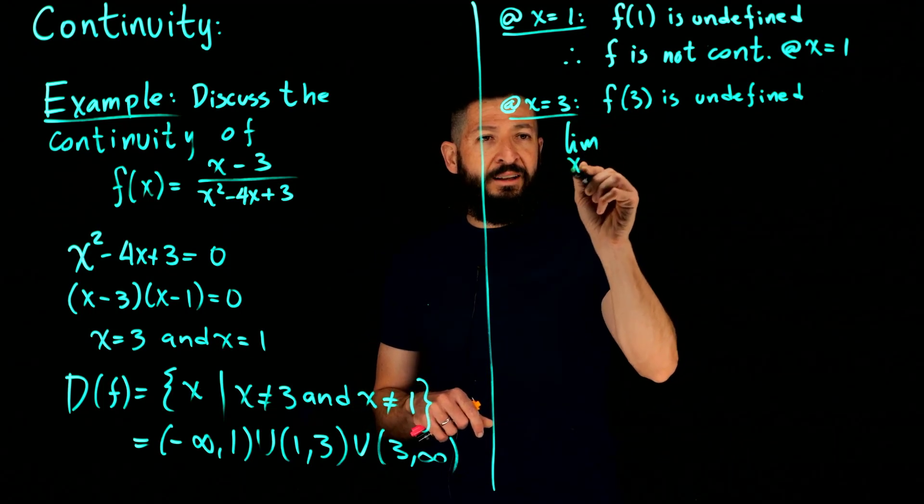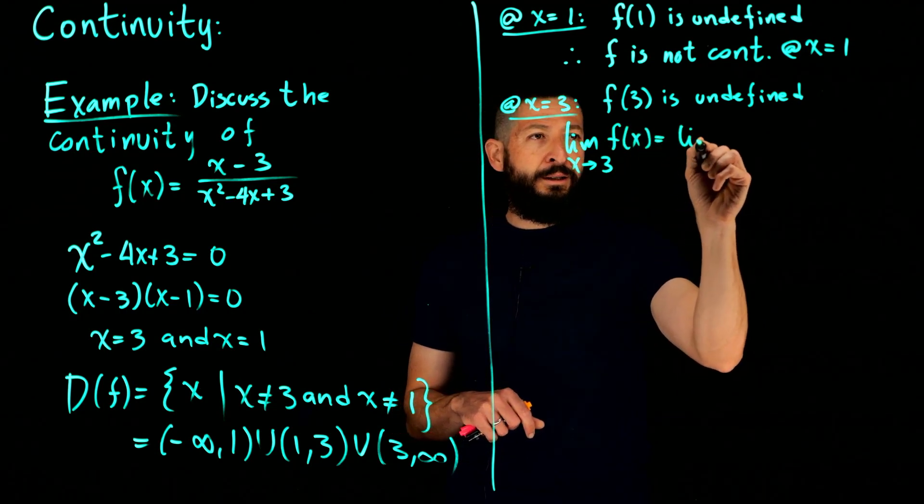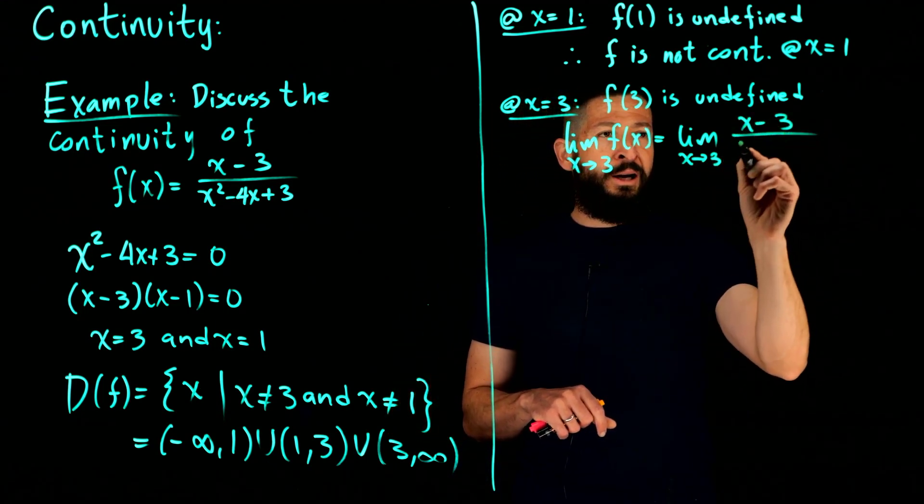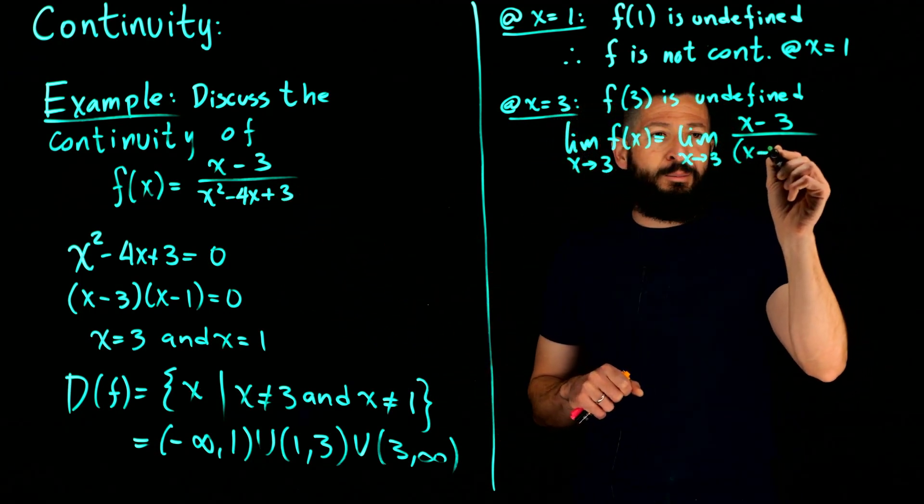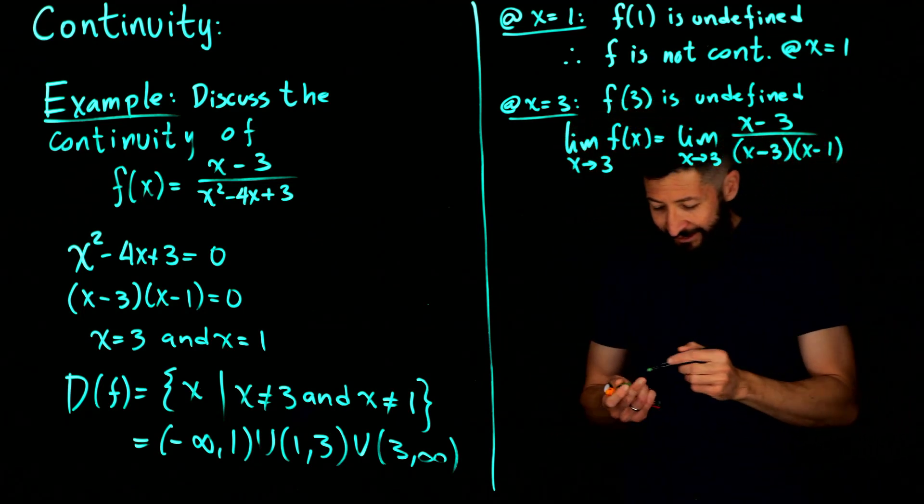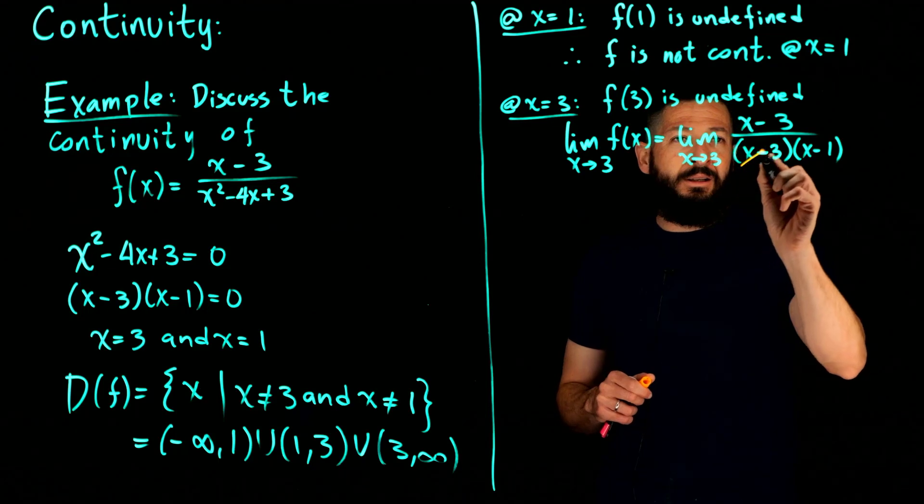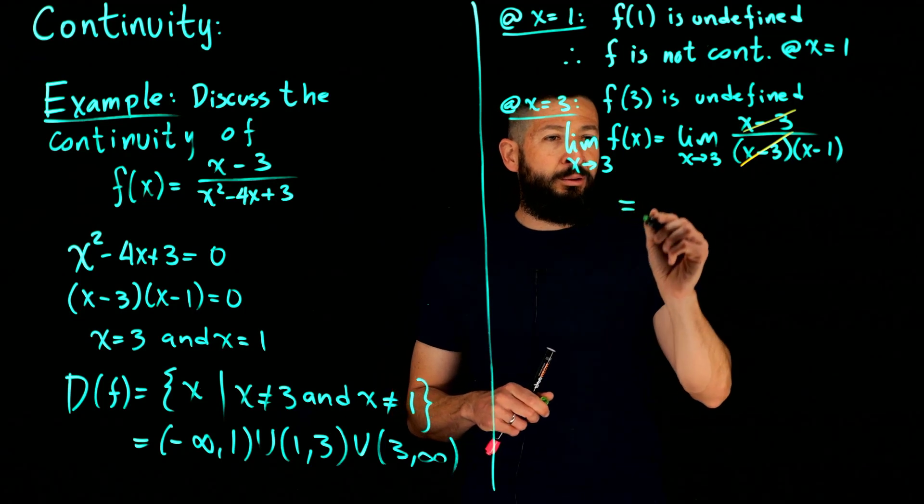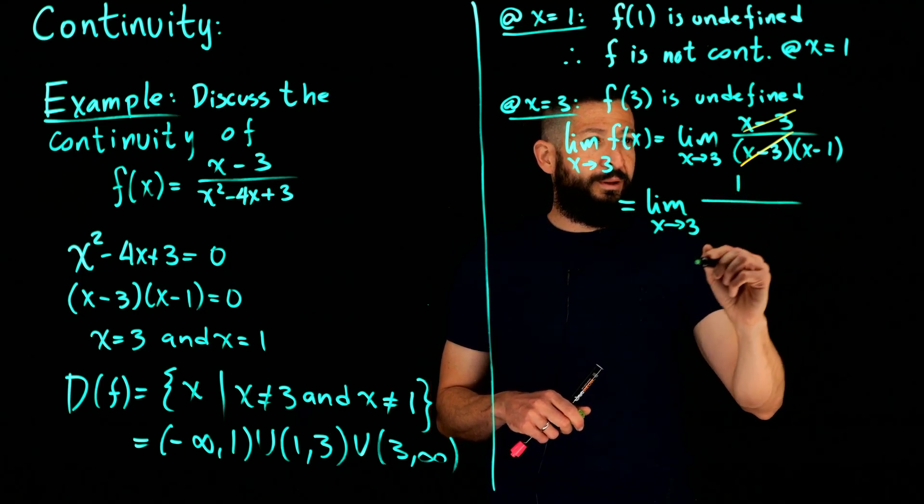The limit as x goes to 3 of f of x is going to be the limit as x goes to 3 of x minus 3 divided by the factoring I did of x squared minus 4x plus 3 will help us, so let's write it as x minus 3 times x minus 1. And now we notice that the reason why that 3 is going to be different is because that one actually cancels in the limit.